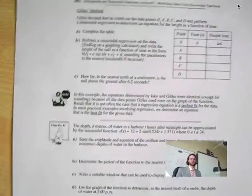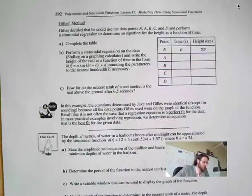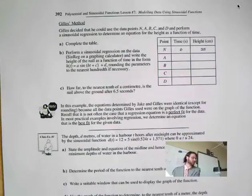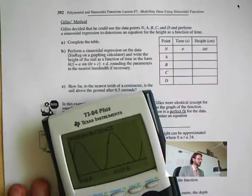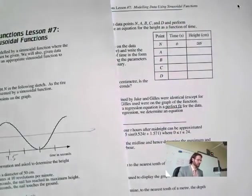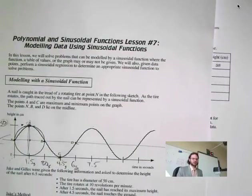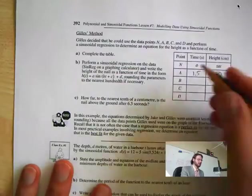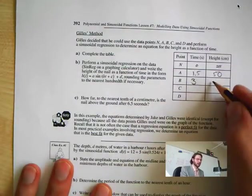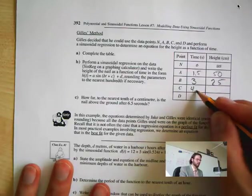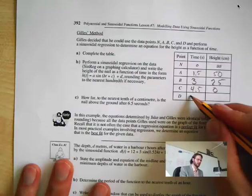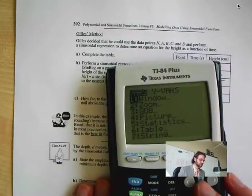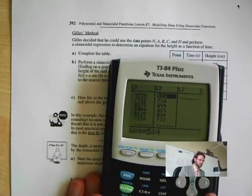Next question. Here is Gilles' model. Gilles completed this table. Gilles decided that he could use data points N, A, B, C to perform a sinusoidal regression. So he made the table and put all of these in the table. We're going to use these points. He looked at these and put them into the table. He had 0 is 25, 1.5 is 50, 3 is at 25, C is 4.5 is 0. So we put those in this calculator.